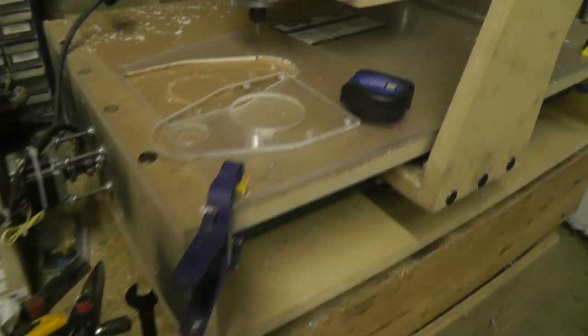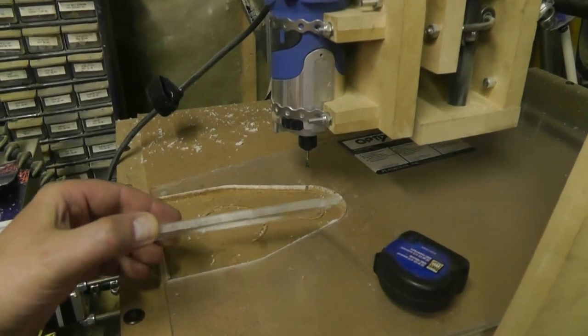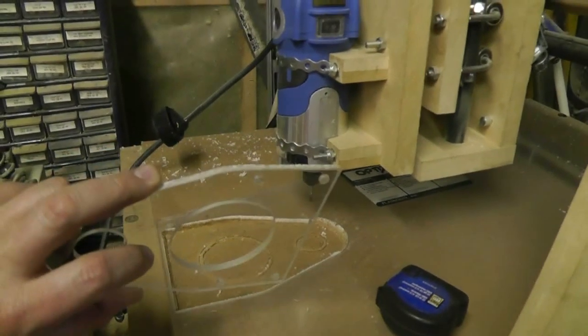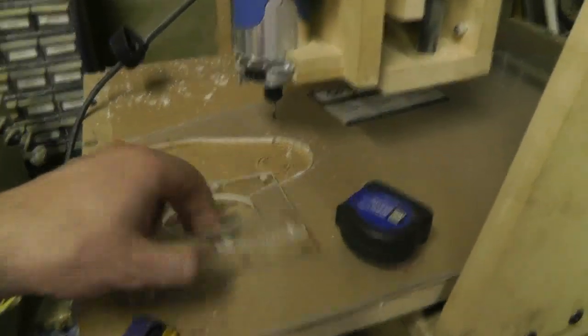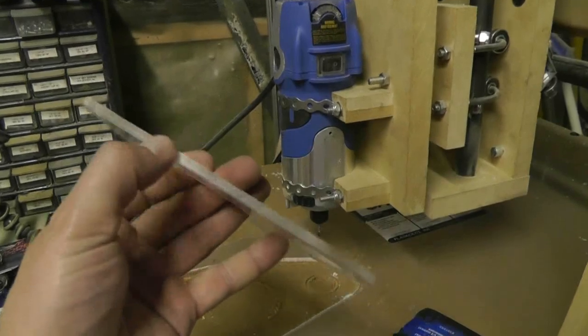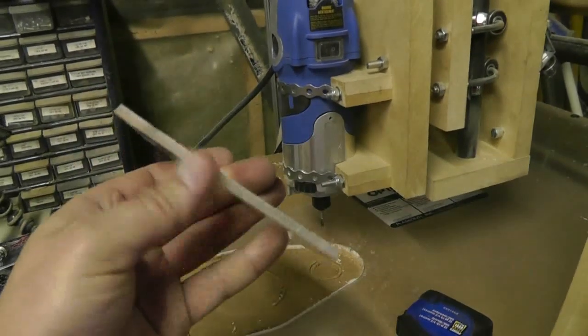So I cut the Lexan. Lexan actually... acrylic, I don't know the differences between Lexan, polycarbonate, and acrylic, but this was labeled as acrylic so I'll call it acrylic. It seemed to cut fairly well. Some machine marks on the edges there.